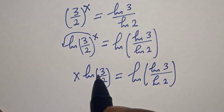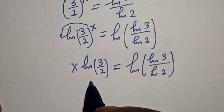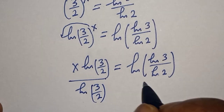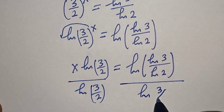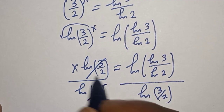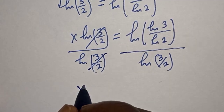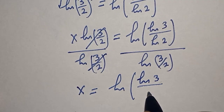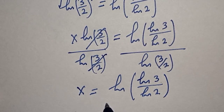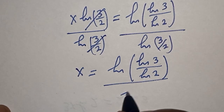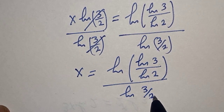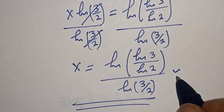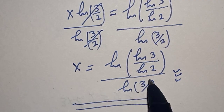Now let's divide both sides by natural log of 3 over 2, because we are looking for the value of s. Divide by natural log of 3 over 2 on both sides — this cancels, and s is equal to natural log of natural log of 3 over natural log of 2, divided by natural log of 3 over 2. And that is our final answer. Like, share, comment and subscribe. Thank you, bye bye.